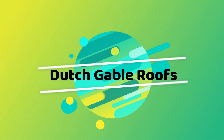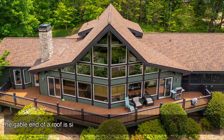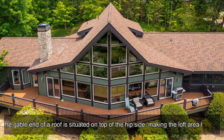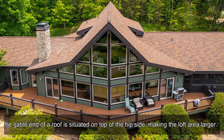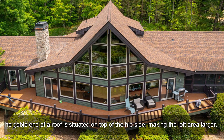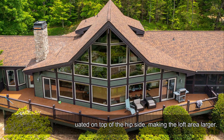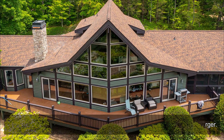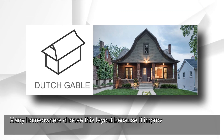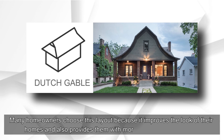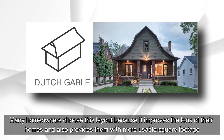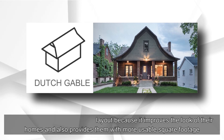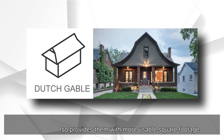Dutch Gable Roofs. The gable end of a roof is situated on top of the hip side, making the loft area larger. Many homeowners choose this layout because it improves the look of their homes and also provides them with more usable square footage.